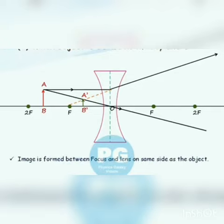So the image is formed between focus of the lens and the optical center on the same side as that of the object. And the image is virtual and erect, and the size is smaller.